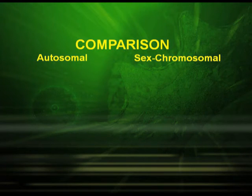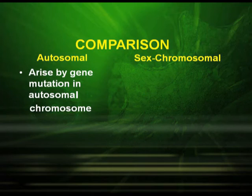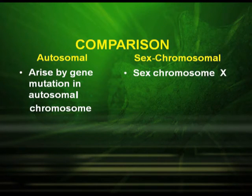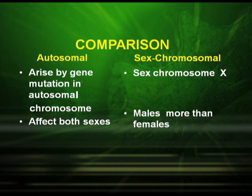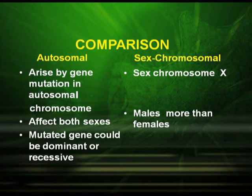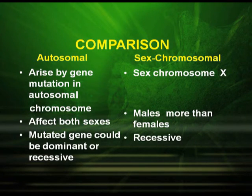After studying these disorders, let us compare autosomal disorders and sex chromosomal disorders. In autosomal disorders, they arise by gene mutation in autosomal chromosomes; both sexes are affected; and the mutated gene could be dominant or recessive. On the other hand, in sex chromosomal disorders, the gene mutation occurs in the sex chromosome, especially the X chromosome; it is the male which is more affected; and the mutated gene is mostly recessive.